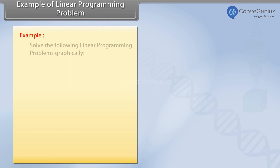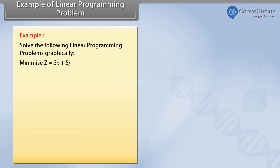Example: Solve the following linear programming problems graphically. Minimize Z equals 3X plus 5Y such that X plus 3Y is greater than or equal to 3, X plus Y is greater than or equal to 2, and X, Y greater than or equal to 0.